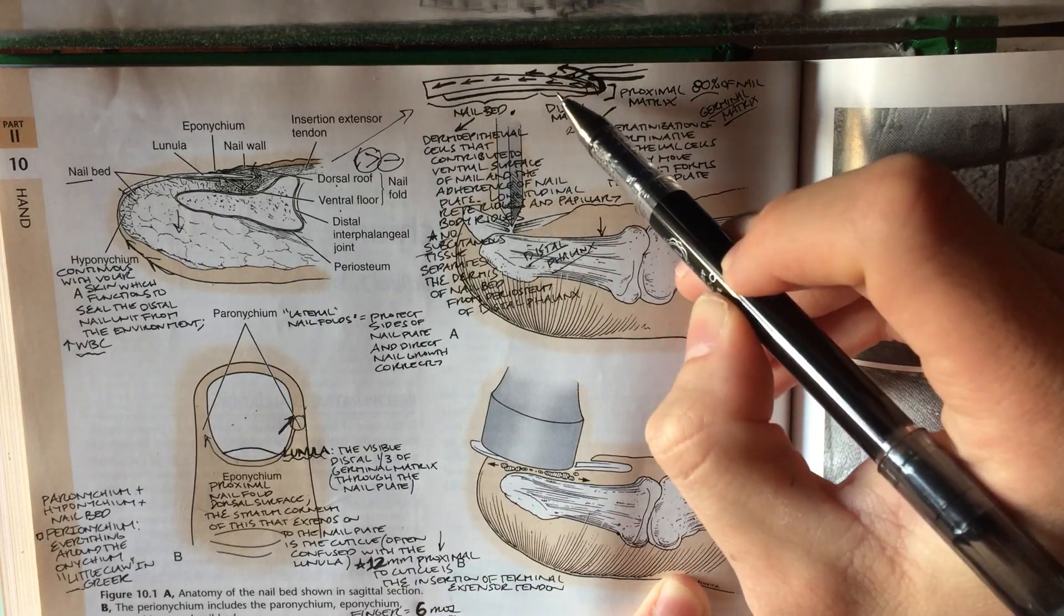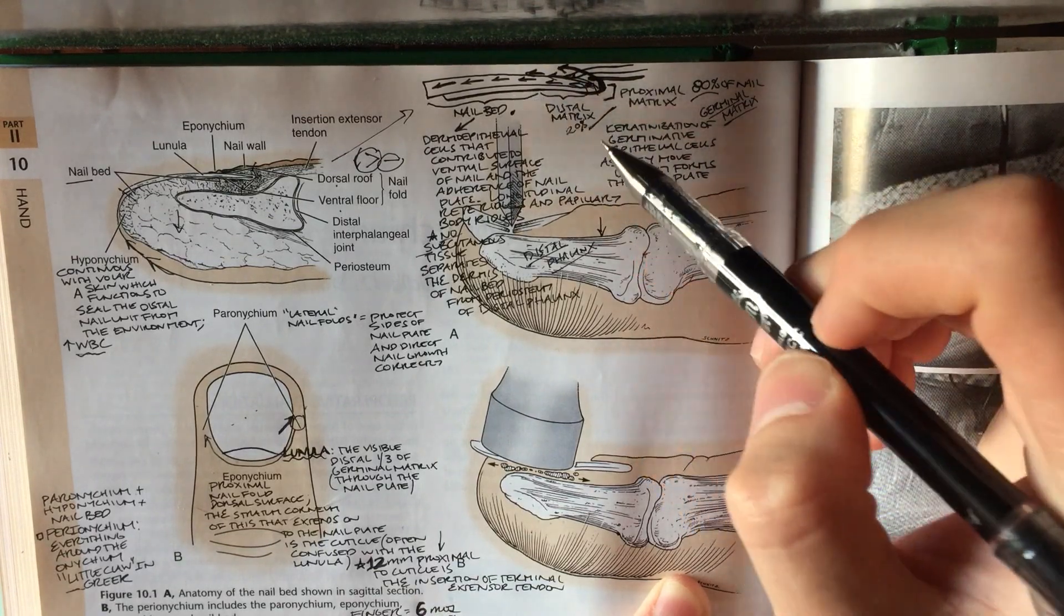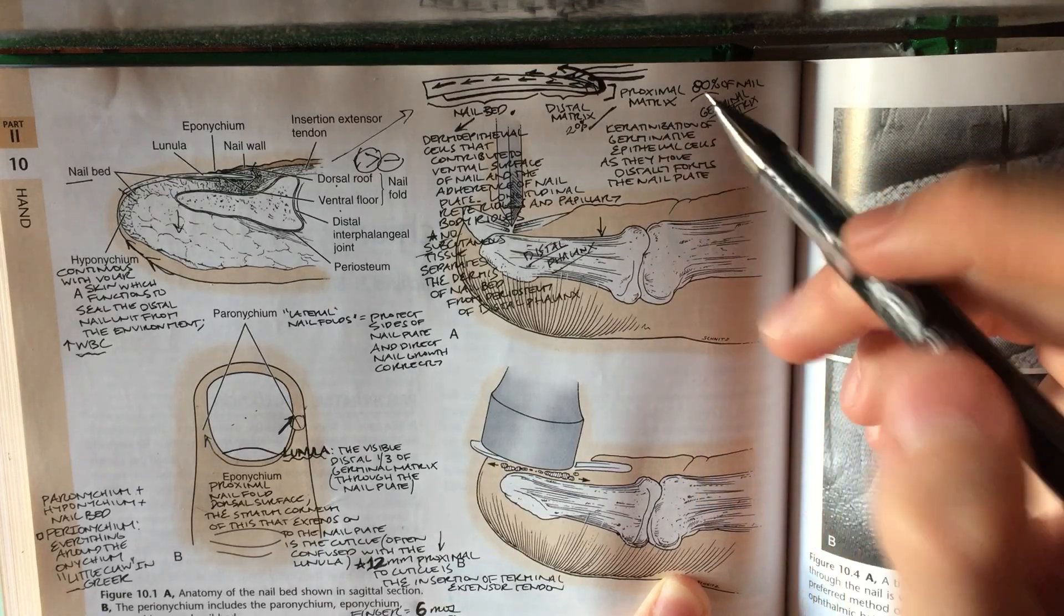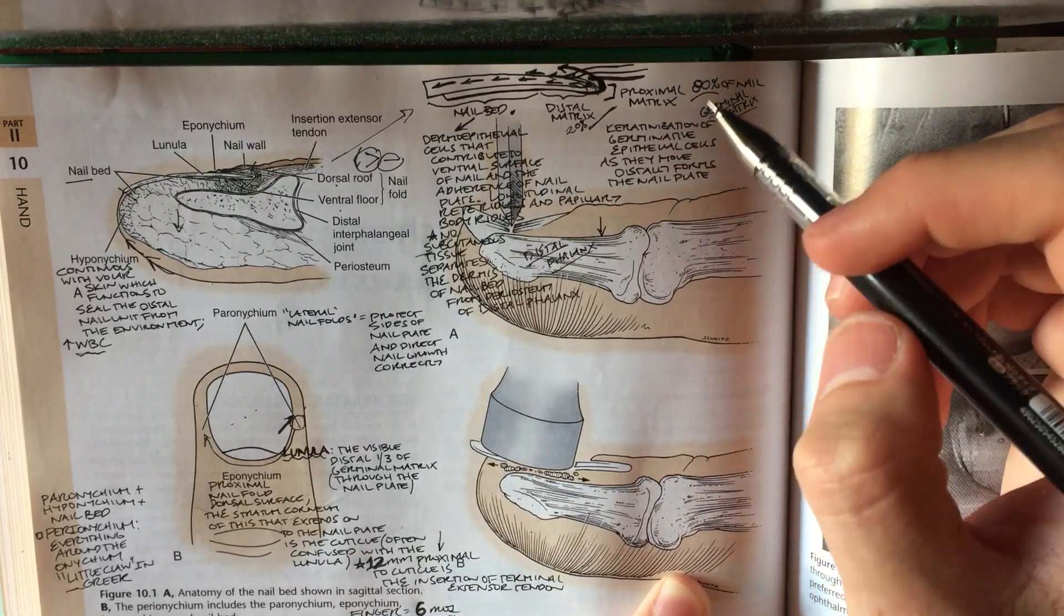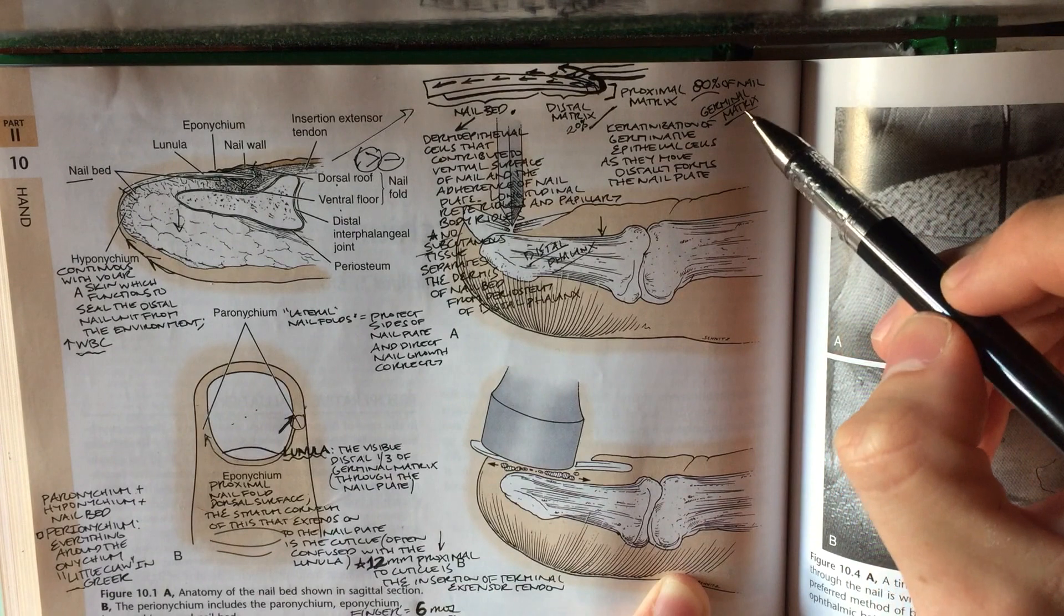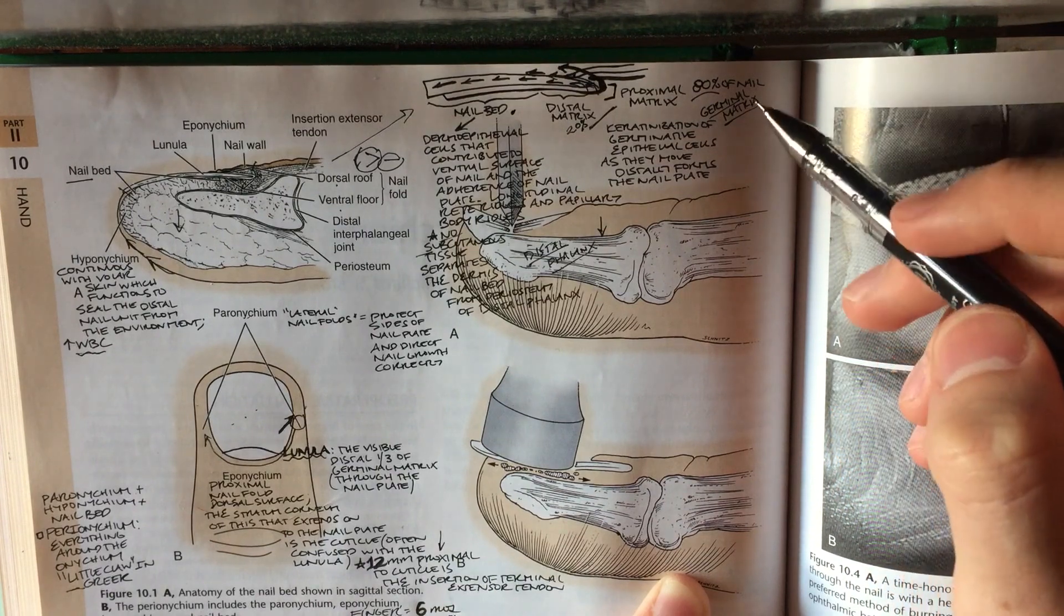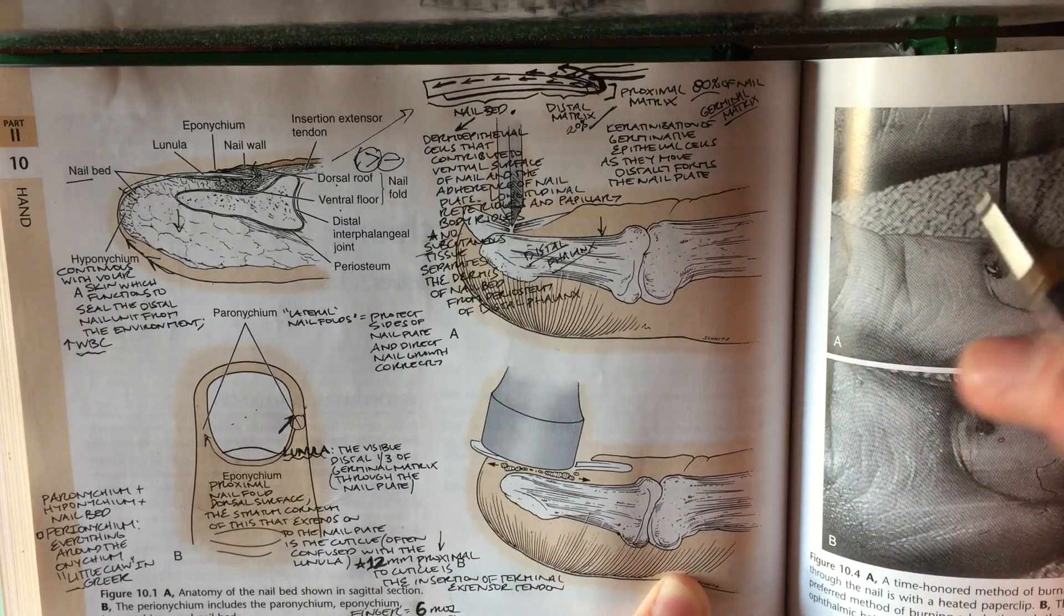The other distal matrix part is responsible for more of the ventral part. It's not important for you to know for test points or anything like that, but just thought I would include it for completion. The germinal matrix basically has the fancy germative epithelial cells, stem cells if you will,